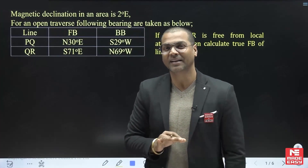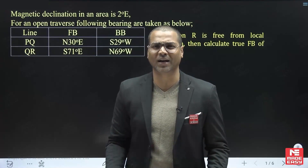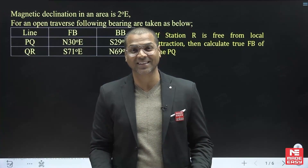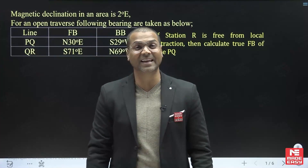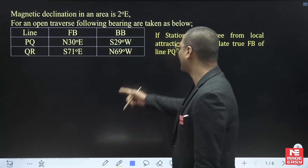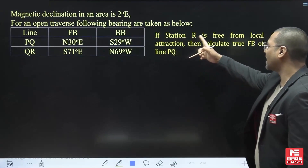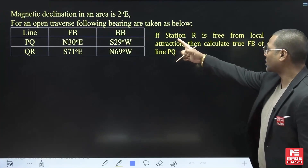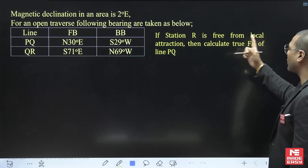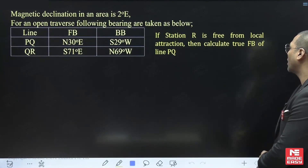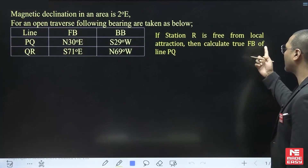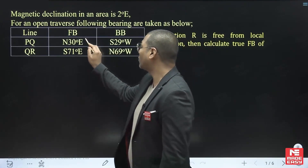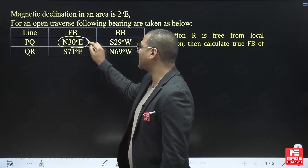In this type of question, if they ask you to calculate any angle, you don't need to solve for local attraction because angles are never affected by local attraction. But here they are asking for the bearing. The question says: if station R is free from local attraction, calculate the true forebearing of line PQ. So they are asking for the true bearing.